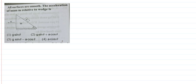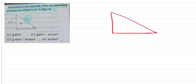We are solving a problem based on Newton's laws of motion. All surfaces are smooth, meaning there is no friction. The acceleration of mass M relative to the wedge is what we want to find. I will redraw the diagram for clarity. Here is the wedge of mass capital M, and on this wedge there is a small block of mass small m.